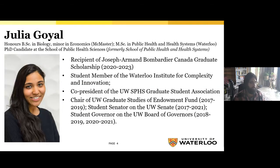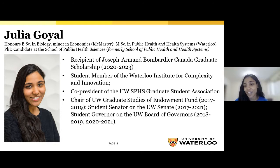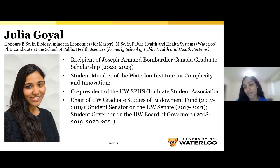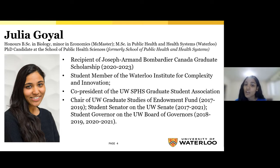My name is Julia Goyle and I'm a current PhD student at the School of Public Health Sciences, formerly known as the School of Public Health and Health Systems. I got my Bachelor of Science in Biology with a minor in economics from McMaster, and did my MSc in Public Health and Health Systems at Waterloo. I am a recipient of the Shirk Bombardy Scholarship, a student member of the Waterloo Institute for Complexity and Innovation, and currently serving as co-president of my department's graduate student association. I've also served as chair of the UW Graduate Studies Endowment Fund, as senator, and as a governor on the Board of Governors.